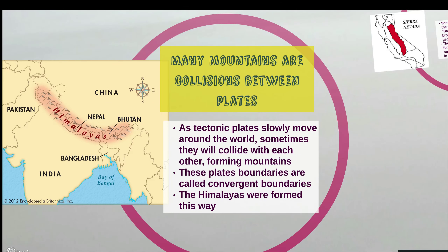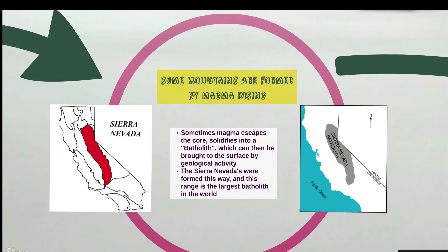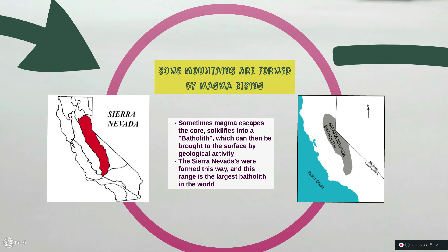There are other ways mountains can form. Some mountains are formed by magma rising — sometimes magma will break through the crust and over time solidify into a structure called a batholith. A batholith is essentially magma that got frozen underground. Over time these batholiths can be forced to rise to the surface by geological forces, creating mountains. The Sierra Nevadas in California are actually made from a collection of batholiths which joined together to form the largest batholith in the world.